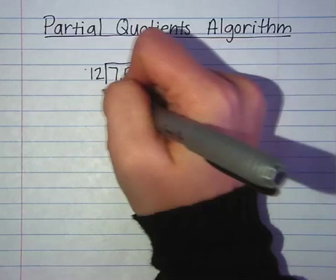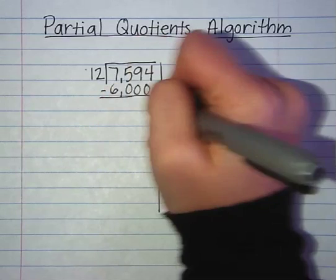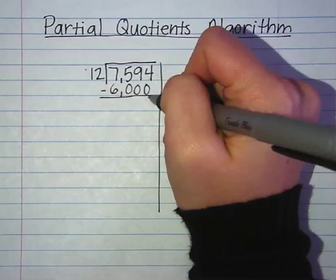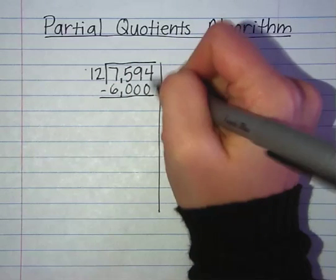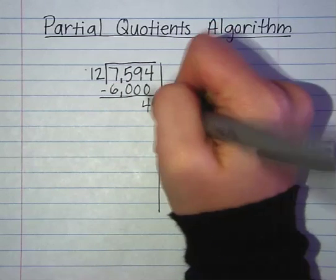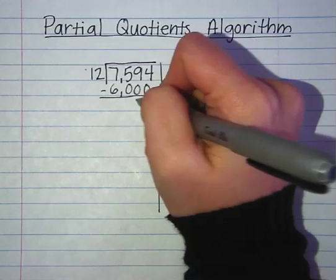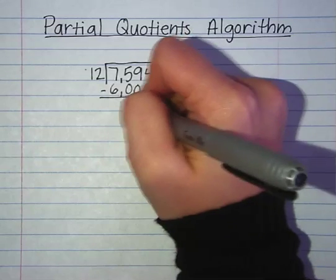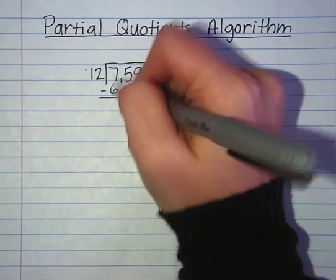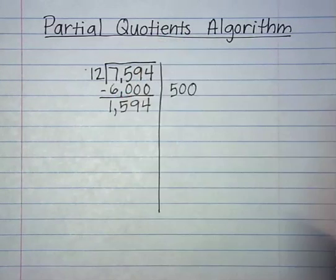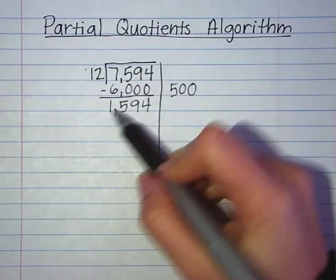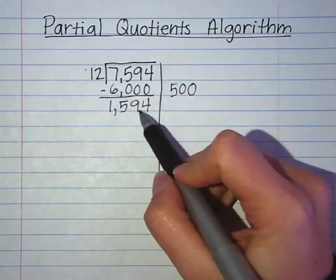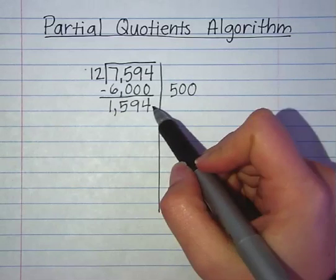I write 6,000 directly below and then I subtract. 4 minus 0 is 4, 9 minus 0 is 9, 5 minus 0 is 5, 7 minus 6 is 1. So now I'm left with 1,594.